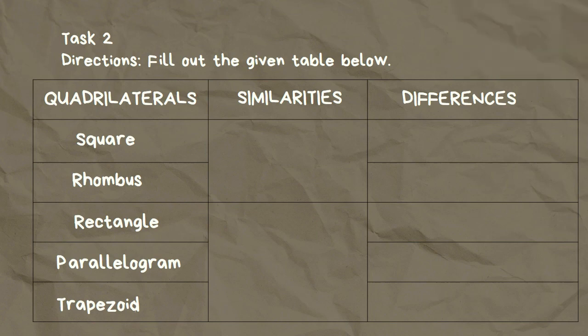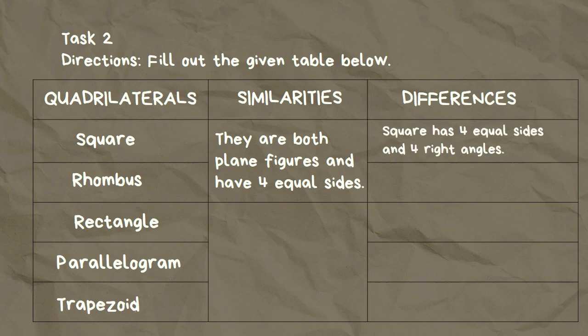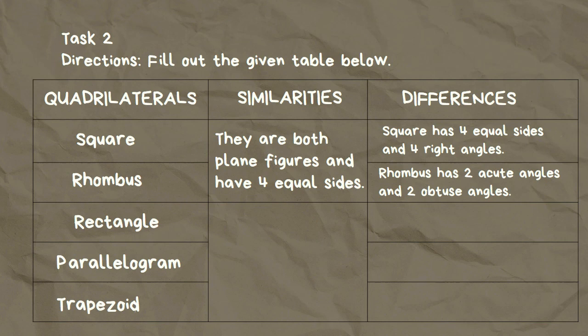Let's answer. The similarities of square and rhombus are they are both plane figures and have four equal sides. While their differences are: square has four equal sides and four right angles, while rhombus has two acute angles and two obtuse angles.